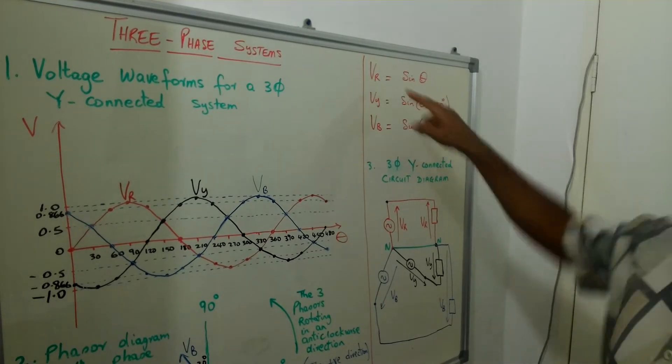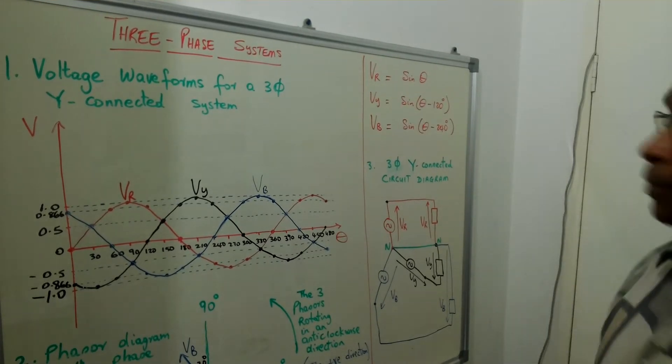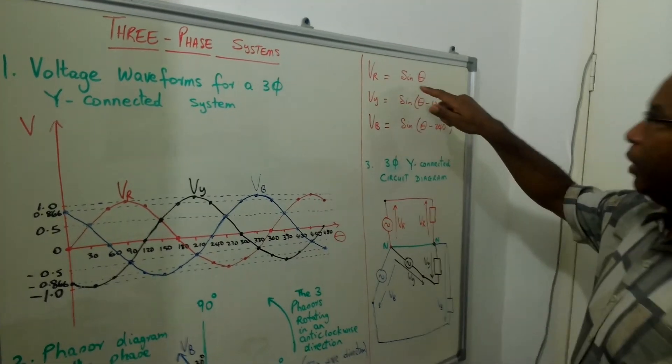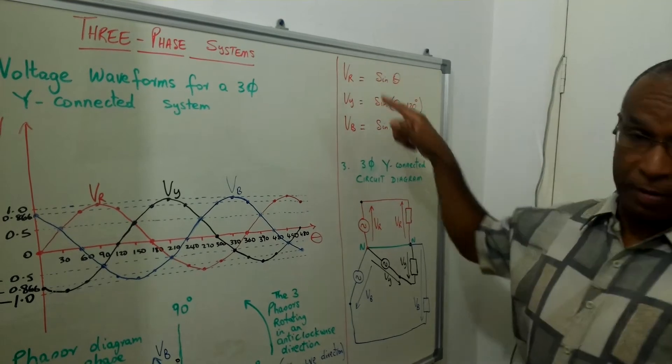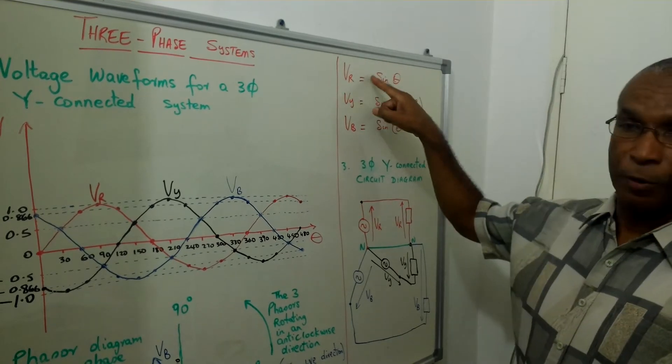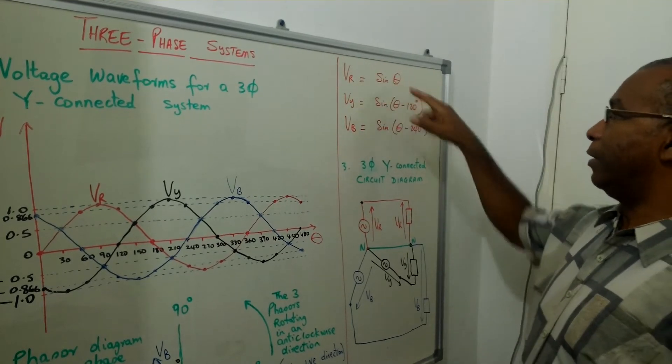So VR, you know that they are sinusoidal waveforms. So VR is equal to sine theta. It could be Vmax and Vmax here is assumed to be one. So Vmax sine theta.